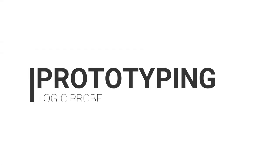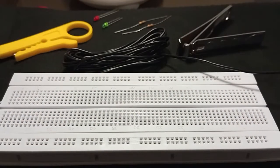We will now start prototyping the logic probe in the breadboard. For this, we need connecting wires, two LEDs and resistors, and a nail cutter for stripping off the insulation of the connecting wires.